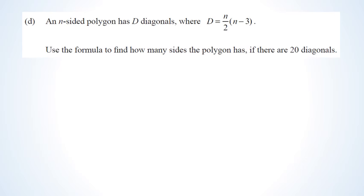With this question, you've been given a formula for an N-sided polygon where D represents the number of diagonals. The formula is D equals N over 2 times (N minus 3). They're asking you to find how many sides the polygon has if there are 20 diagonals.